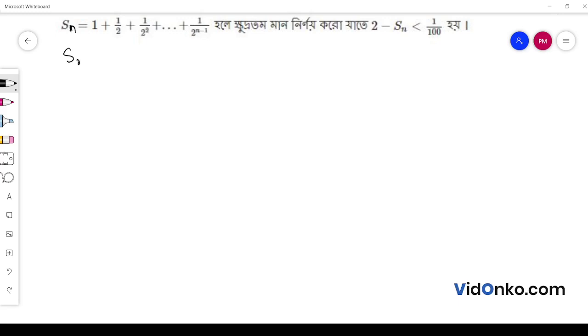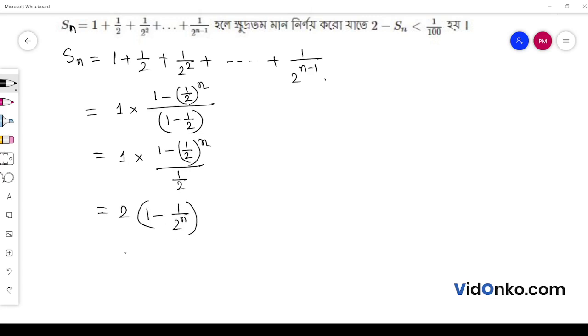Sn is equal to 1 plus half plus 1 by 2 square plus dot dot dot plus 1 by 2 to the power n minus 1. This is equal to 1 into 1 minus 1 by 2 to the power n by 1 by half, which equals 2 into 1 minus 1 by 2 to the power n.